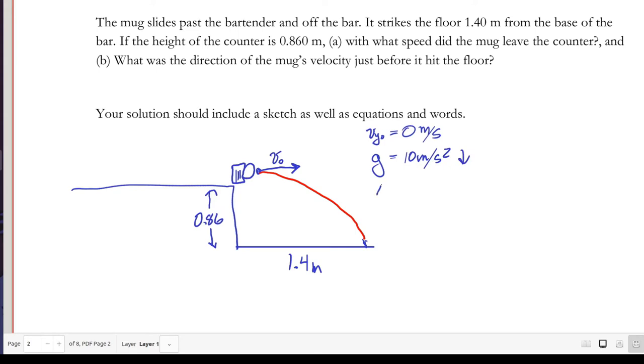We see that our delta y, how far this falls, is negative 0.86 meters, and the distance that this travels along x is 1.4 meters.